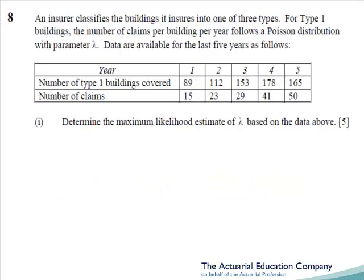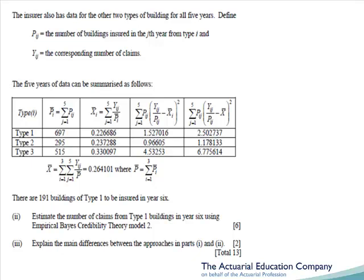In question 8 part 1 we have a Poisson distribution and some claims data and we were asked to determine the maximum likelihood estimate. Essentially we know this is going to be the mean, but for 5 marks we're going to have to show some working. This is a very standard question and should have presented no problems at all. For part 2 we get to apply the EBCT, and for the first time since it came back in the syllabus, we get to do model 2. Students in tutorials would have been warned of this and hopefully prepared accordingly — essentially all we do is take the numbers and plug them into the formula in the tables, which should have been an easy 6 marks. Part 3 asks us to explain the difference between maximum likelihood estimation and the EBCT, with the key feature being that EBCT just works with data and makes no distributional assumptions.